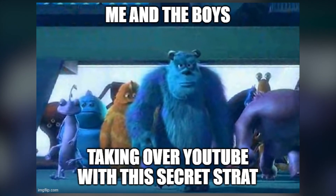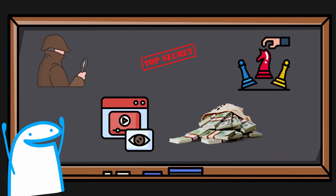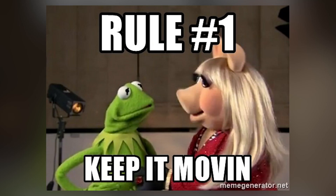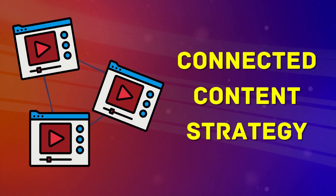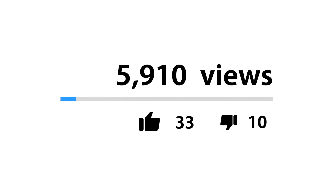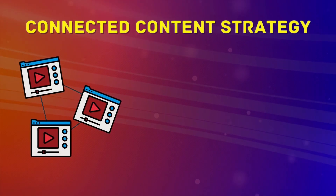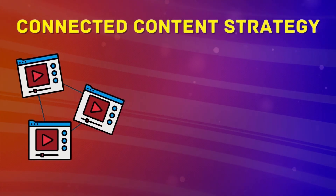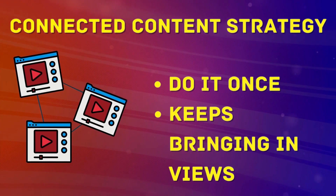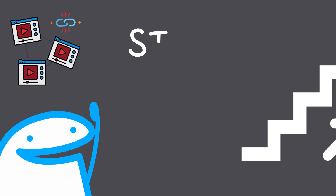This is a big one. I am going to show you a secret strategy that will get you more views and make more money on your YouTube videos. We keep it moving on this channel, so here's how you do it. I'm going to teach you a secret strategy called the connected content strategy. This can easily get you 100,000 views a month on one video, and you only have to do it once — it will keep bringing in views and money over time.